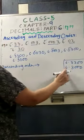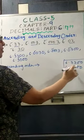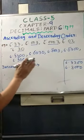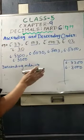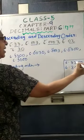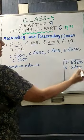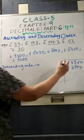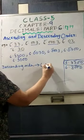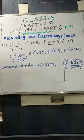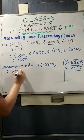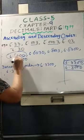Now we compare 6.3300 and 6.3000. Whole numbers are the same. In the tenths place, both have 3 — same. In the hundredths place, it is 3 and it is 0. As 3 is bigger than 0, we write 6.3300 first, and then 6.3000 second.